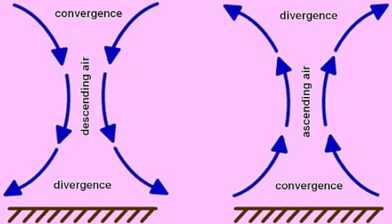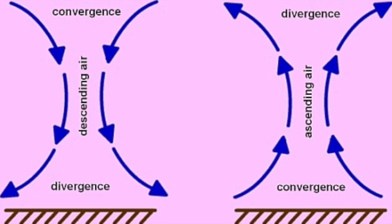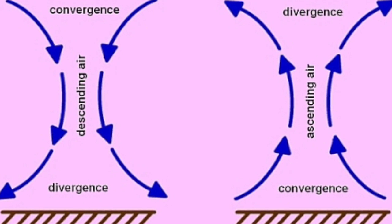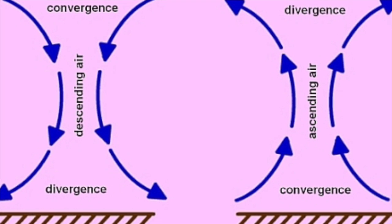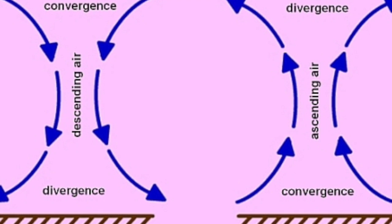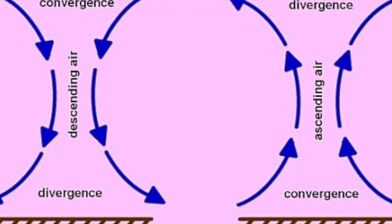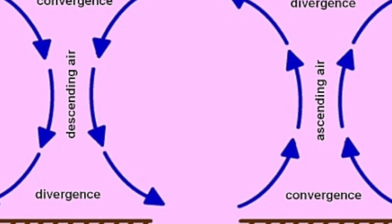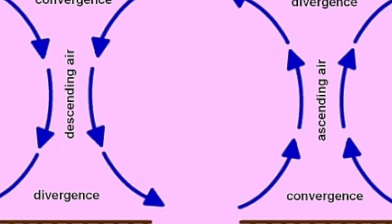The polar jet stream has concentrated upper-air divergence and convergence. Divergence is favored in the downstream, poleward sector of the jet core, as well as the upstream, equatorward sector. Regions for extra-tropical cyclone development are favored.